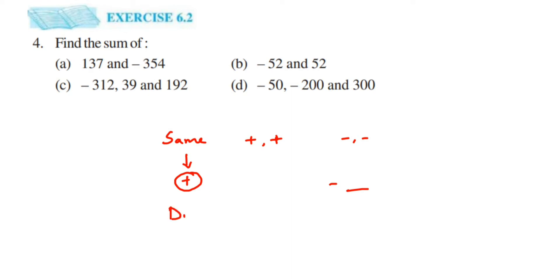Now what happens if the signs are different — like plus and minus, or minus and plus? In the case of different signs, we have to always subtract them. After subtracting, what will be the sign of the final answer? The final answer's sign depends upon the greater number.